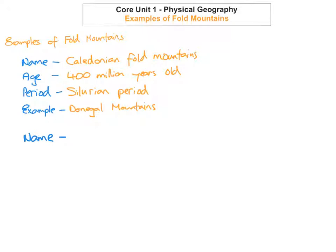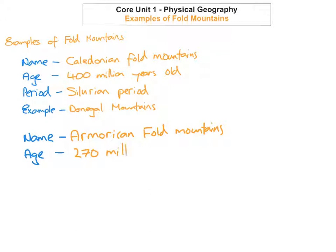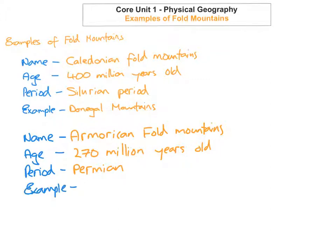The next one we're going to look at is the American fold mountains. The American fold mountains are about 270 million years old. These American fold mountains formed during the Permian geological period. An example of the American fold mountains would be the Macgillycuddy's Reeks. And because a lot of the pressure was coming from the south of the country, the trend of the Munster Mountains has an east-west trend.